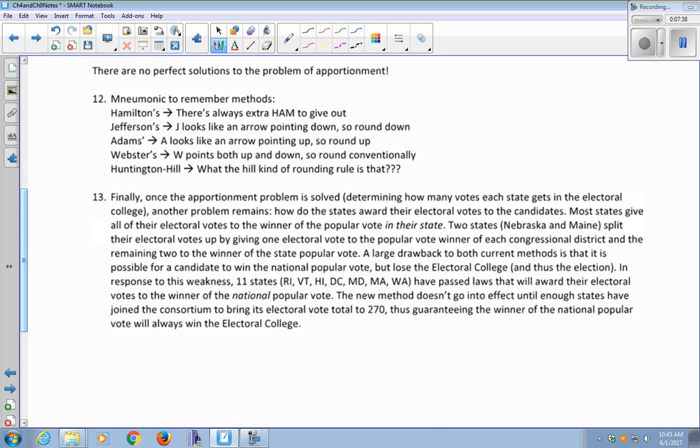So finally, I just want to talk briefly about a current issue that we're dealing with that's related to apportionment. Once the apportionment problem is solved, that is, we've figured out how many votes each state is going to get in the electoral college. Another problem remains. How do those states award their electoral votes to the candidates? They have so many votes to give out, how do they decide which candidate gets their votes?